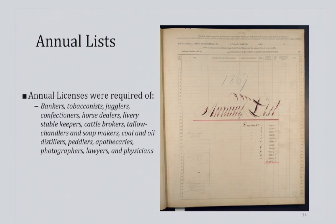Annual licenses were required of a variety of professions, including bankers, tobacconists, jugglers, confectioners, livery stable keepers, cattle brokers, soap makers, oil distillers, peddlers, and more. Various institutions like hotels, inns, and taverns also paid an annual license, and annual stamp duties were imposed on legal and business documents, medicines, cosmetics, and other items.